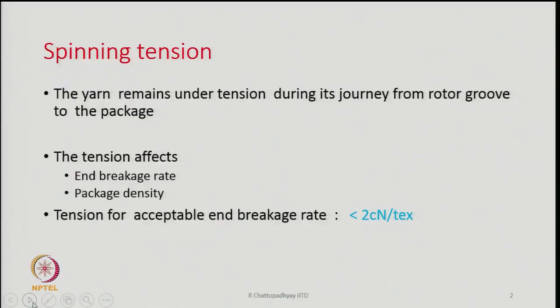End breakage rate affects productivity, and every breakage has to be replaced by a joint through a splicing operation. A splice may sometimes lead to a fault in the yarn because it will never be exactly like the normal yarn. Too many breakages means too many splice joints, which could be a source of faults. Nowadays the splicing technique has improved a lot and most splice joints are so good that you cannot tell them apart from normal yarn.